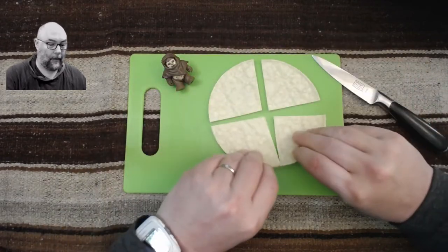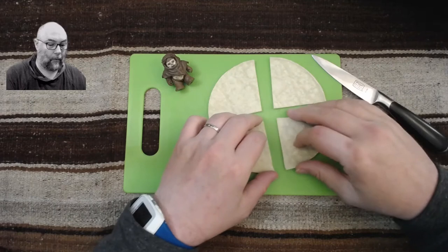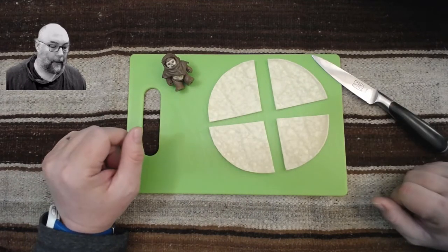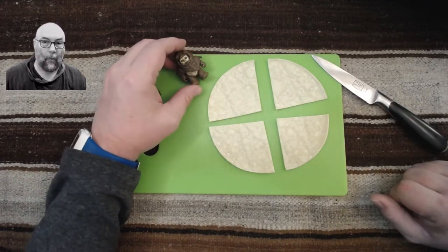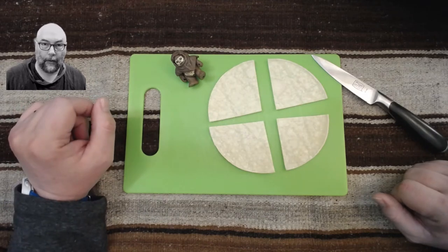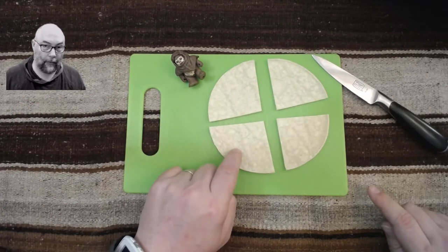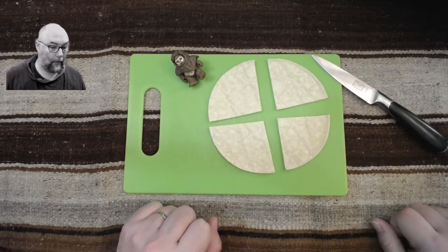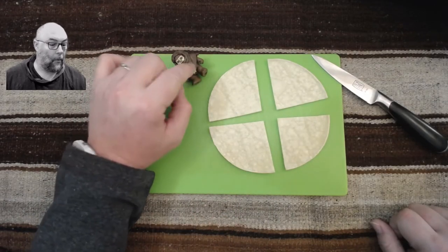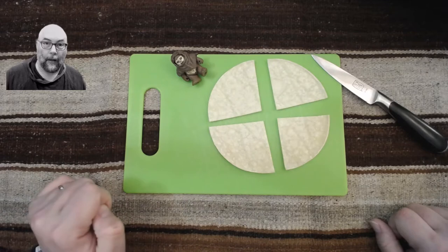So we have, now we have fourths, right? So this guy gets one-fourth of the pizza because this is a fourth, this is a fourth, this is a fourth, and this is a fourth. And this guy is getting one-fourth of the pizza.